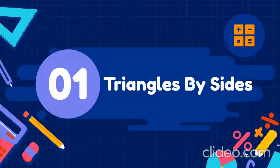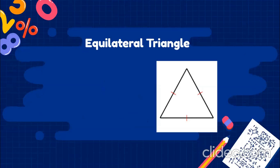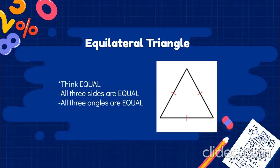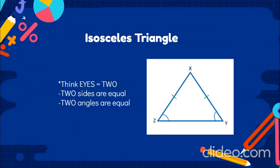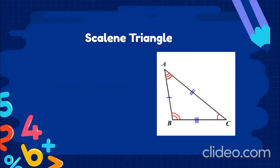First we're going to learn about triangles classified by their sides. The first triangle is the equilateral triangle — think 'equal.' All three sides are equal and all three angles are equal. Next we have the isosceles triangle — think 'eyes.' Because we have two eyes, two sides are equal and two angles are equal.